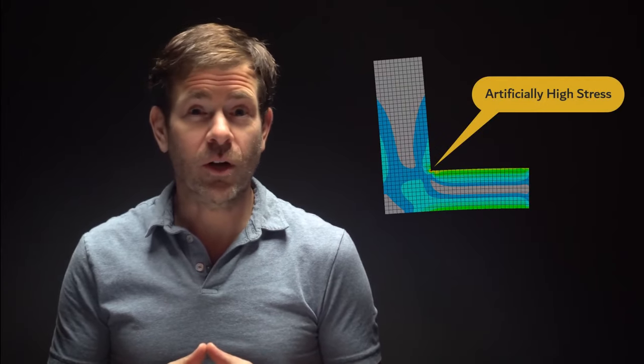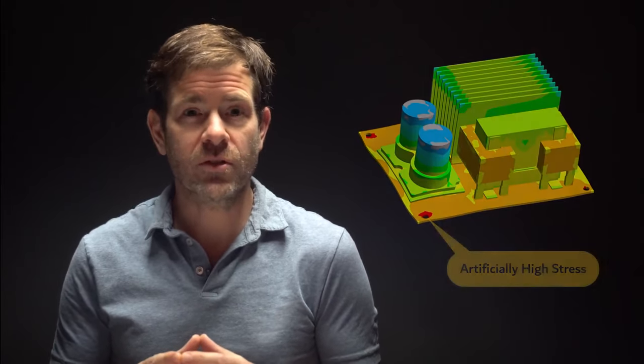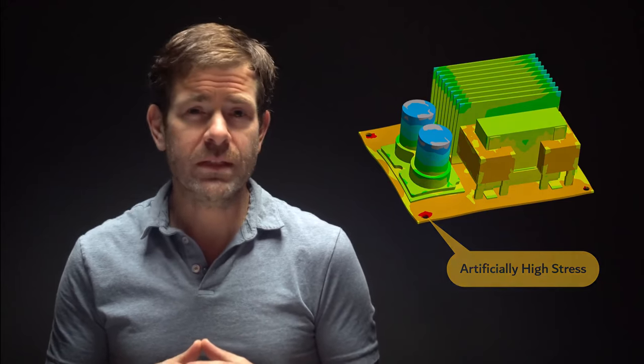Welcome everyone. Engineers are often interested in calculating the stresses developed in a structure to evaluate the design. However, there are situations where artificially high stresses develop, and this poses a big challenge. Understanding when artificially high stresses arise and addressing them is the focus of this lesson. We will discuss situations such as point loads and constraints, re-entrant corners, contact with sharp corners, and over-constraints. This video will consist of a short lecture followed by a walkthrough example using ANSYS Mechanical. Let's get started!